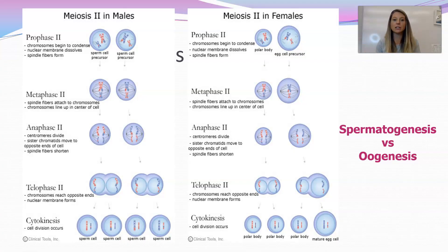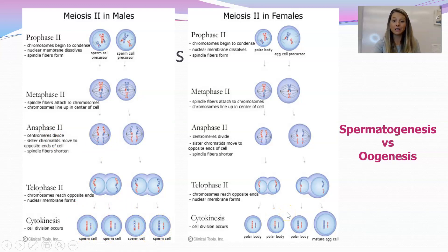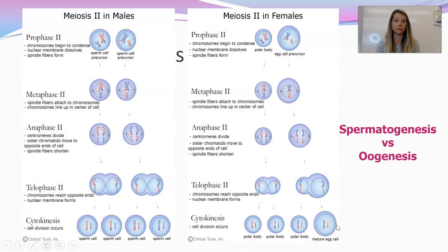This process happens a little differently in males and females. The creation of sperm is called spermatogenesis, and the creation of eggs in females is called oogenesis, because an egg is called an ovum. In spermatogenesis, you produce four true mature sperm cells. But in oogenesis, pretty much all the cytoplasm and organelles get pushed to one cell, so you end up with three cells called polar bodies, which do not mature into an egg cell — and only one of the four cells matures into a true egg capable of fertilization.